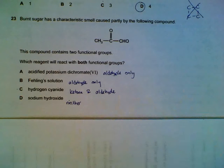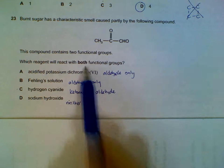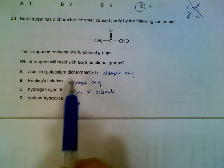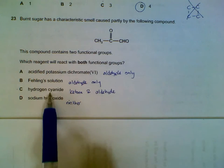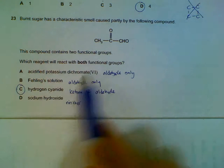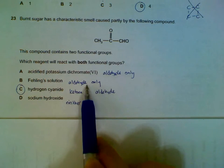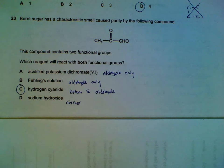We have two functional groups here, aldehyde and a ketone. Which one will react with both? We have option C that reacts with both ketones and aldehyde, your hydrogen cyanide. Dichromate will only react with aldehyde. The one can be oxidized. Same for Fehling solution. And sodium hydroxide reacts with neither.